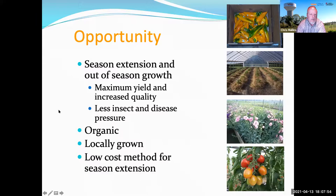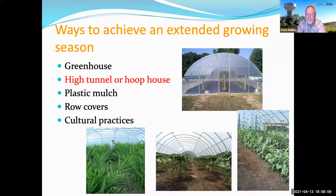There are different ways to think about season extension — from row covers all the way up to a full-blown greenhouse. Today we're mostly going to talk about high tunnels or hoop houses. Sometimes we might call them cold frames or unheated greenhouses — lots of different names for essentially the same type of structure.